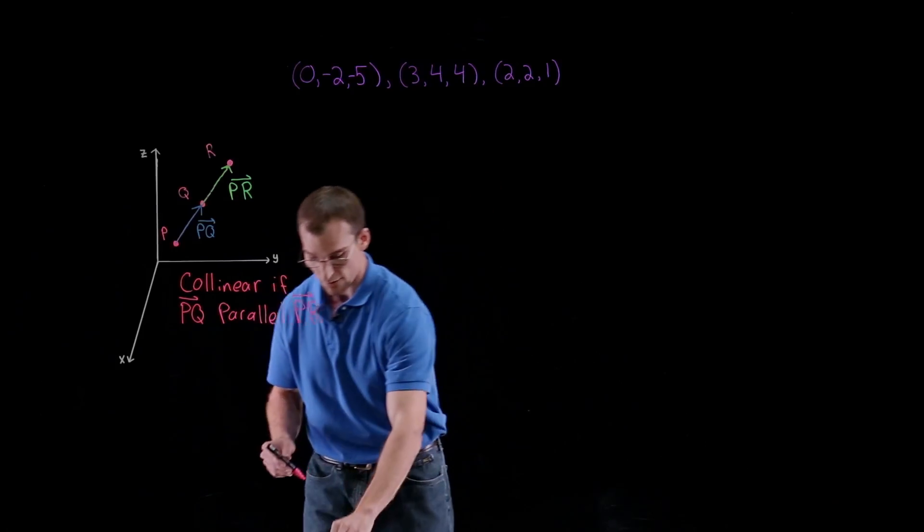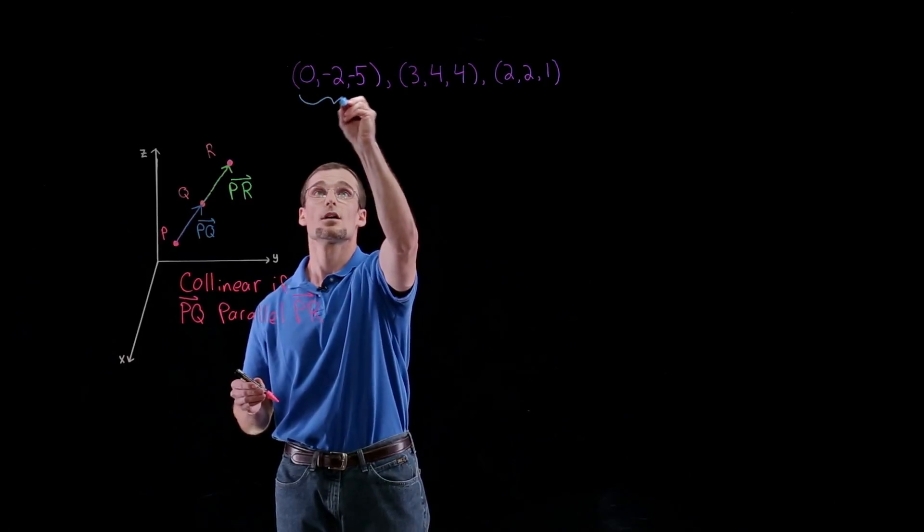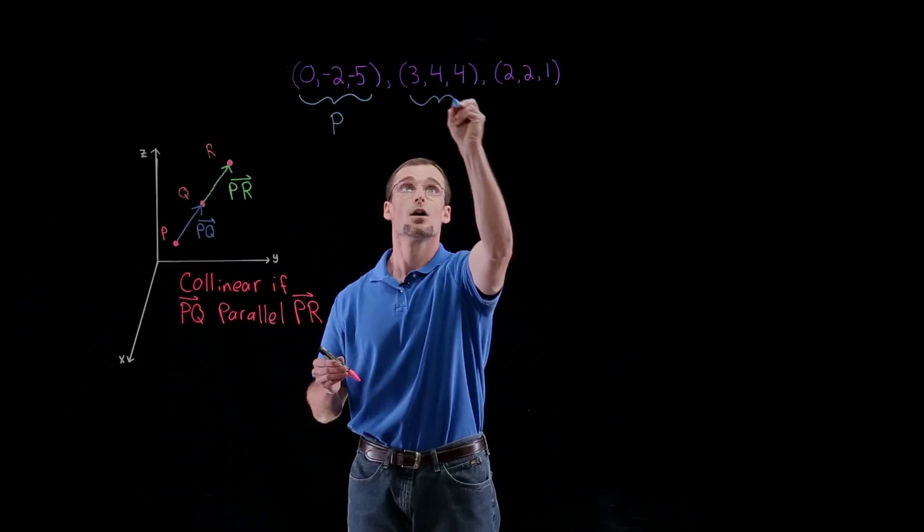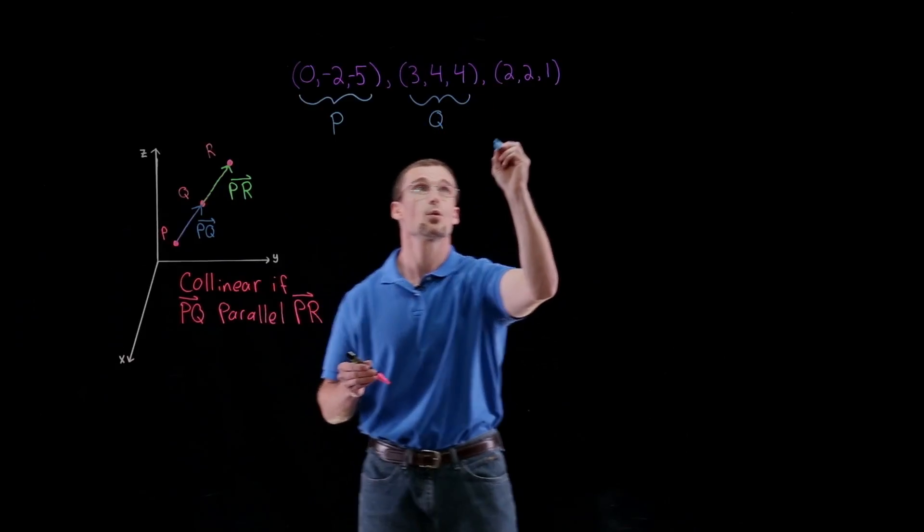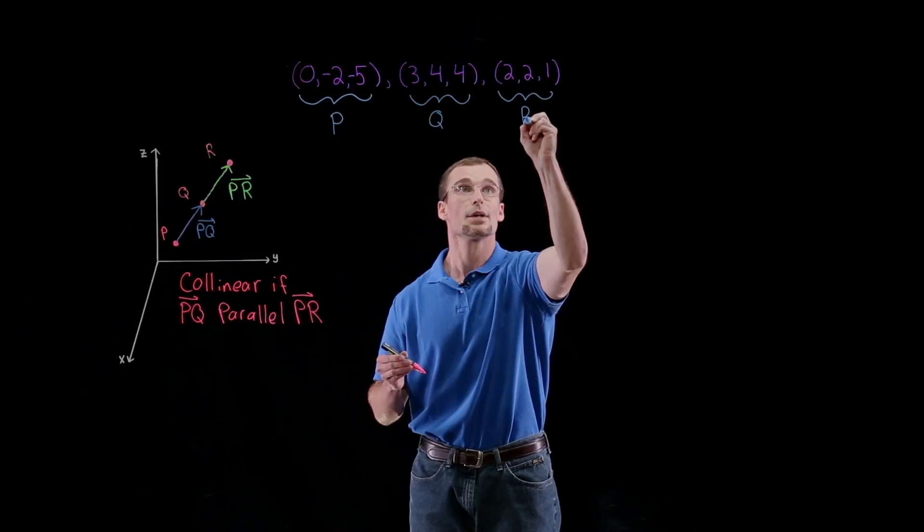We're going to take our vectors that we have here, and we'll just generally call our first point, point P, call our second point, point Q, and we'll call our last point, point R.